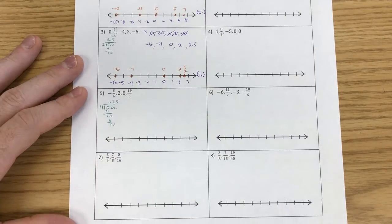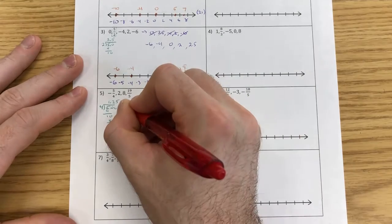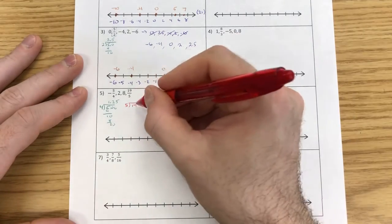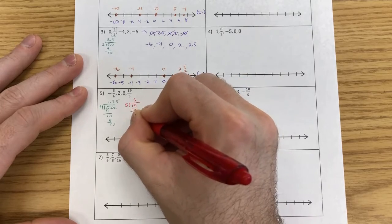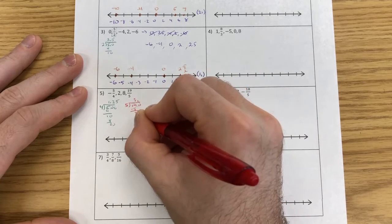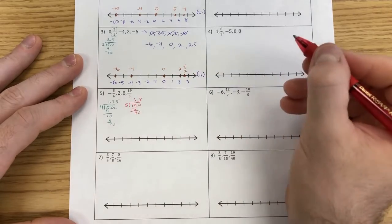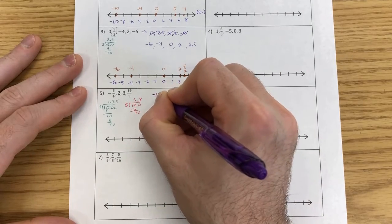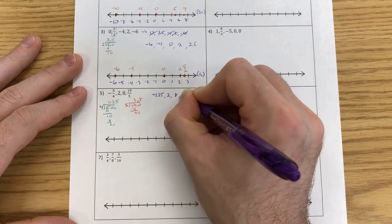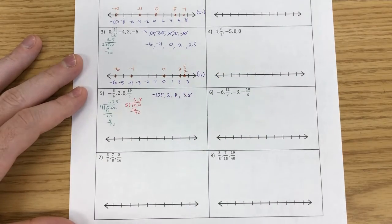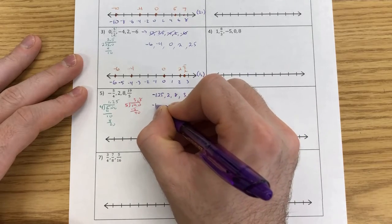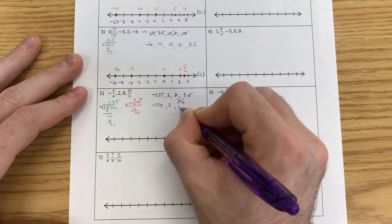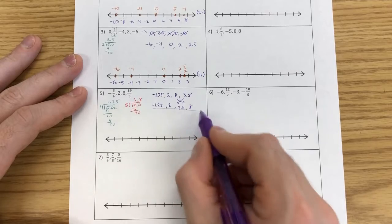I do the same thing to my 19 fifths — take the bottom number, 5, and divide it into the top number, 19. 5 goes into 19 three times. Carry a decimal, and I get 3.8. So my list of numbers is negative 1.25, 2, 8, and 3.8. Almost in the same order — the only thing to change is swapping 3.8 and 8, giving me: negative 1.25, 2, 3.8, 8.